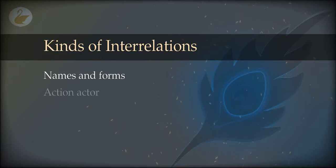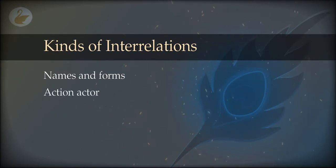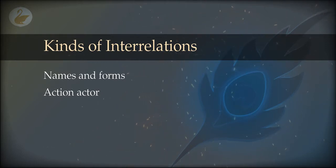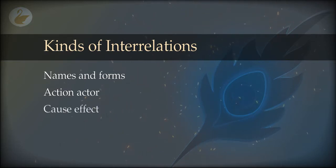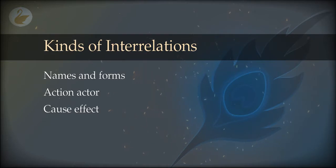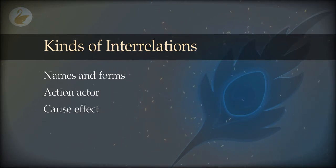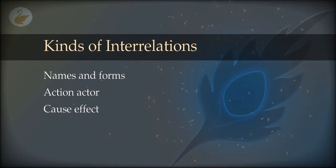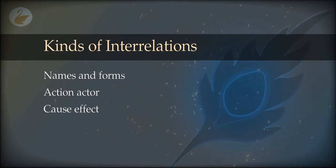The second example is the action and the actor, which answers questions such as who did this and what agency is behind a particular action. There can also be relations of cause and effect, which give us answers to 'why' questions: what caused this, how did it appear, and what will happen if I do something — if one thing happens, what will be its effect.